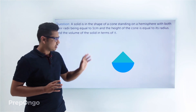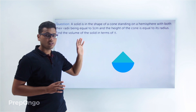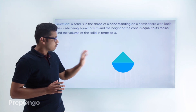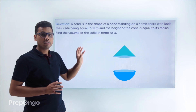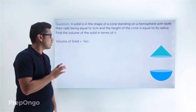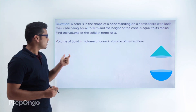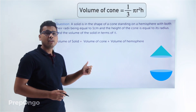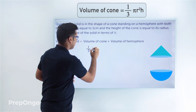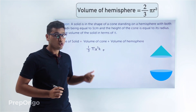So first let's draw the solid — it is a hemisphere with a cone mounted on top of it. Now to calculate the volume of this solid, we add the volume of the cone and the volume of the hemisphere. So the volume of solid equals the volume of the cone plus the volume of the hemisphere. The volume of a cone is (1/3)πr²h, and the volume of a hemisphere is (2/3)πr³.